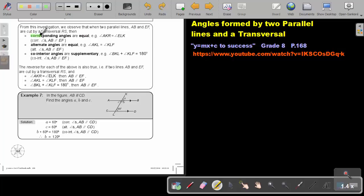Let's just highlight that. Alternate angles are equal if the lines are parallel. And co-interior angles are supplementary. That means they add up to 180 degrees.